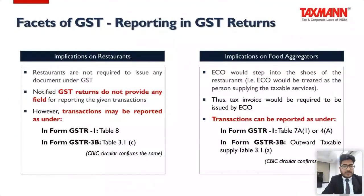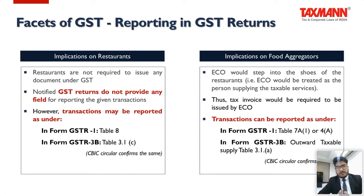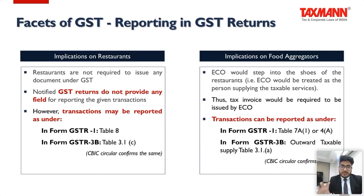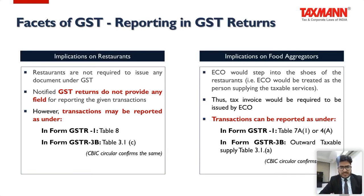One question is whether a restaurant can issue a bill of supply for these services. The answer is no — a bill of supply is required for exempt supplies, but technically these supplies are not exempt supply under the GST law. Even though CBIC's clarification says to report them in the exempt supply field, they are not legally exempt supplies. Therefore, a bill of supply is not required; instead, a commercial invoice may be issued.